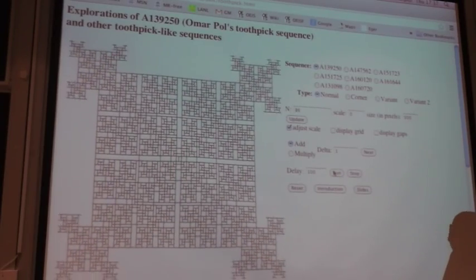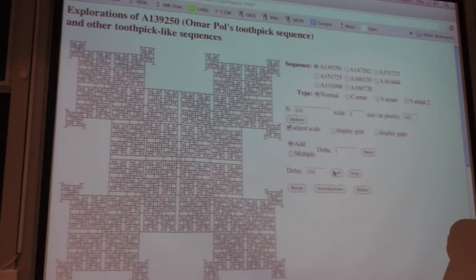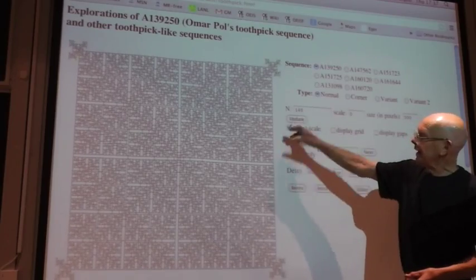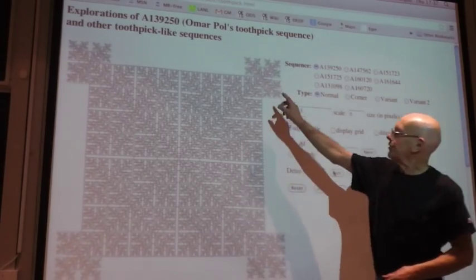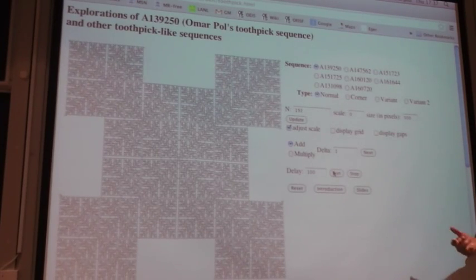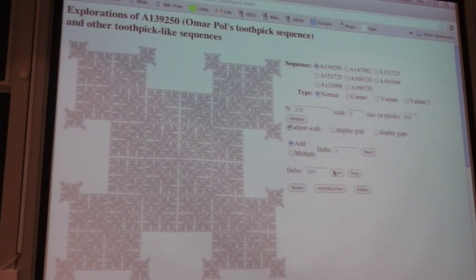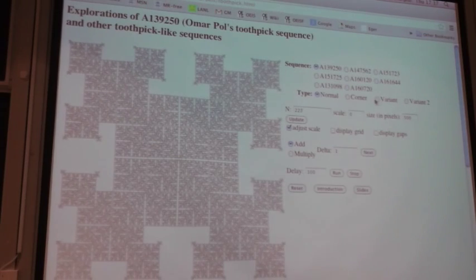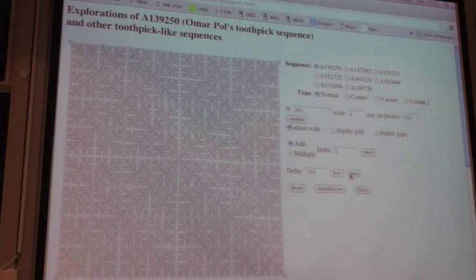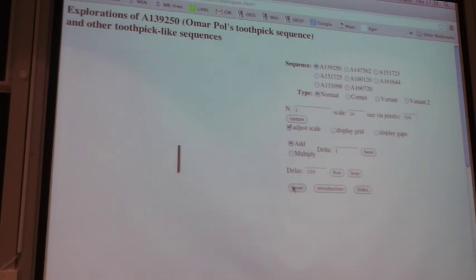This animation was made by David Applegate. And you can see that after a power of two, we're coming up to 128, after a power of two generations, it starts growing from the corners in a predictable way. So this one, it's quite easy to get a look at this point. We analyzed this one completely, although the analysis got fairly complicated.